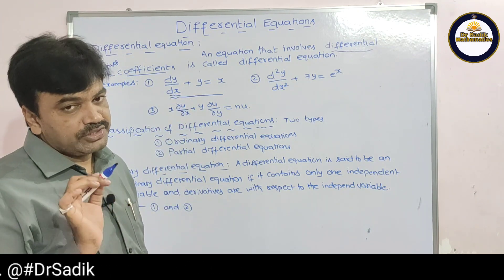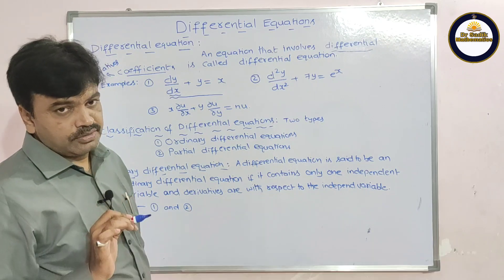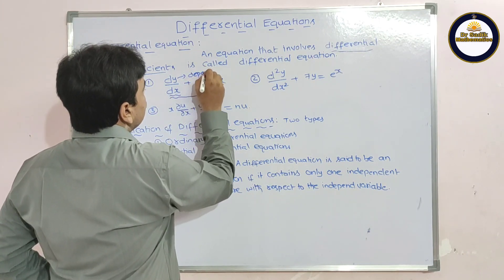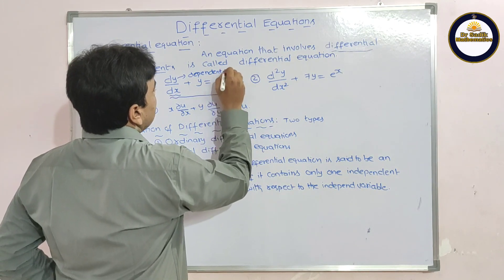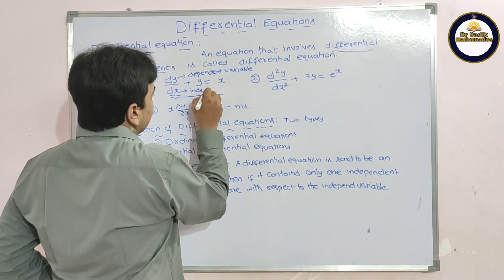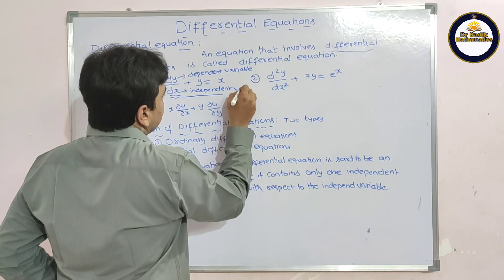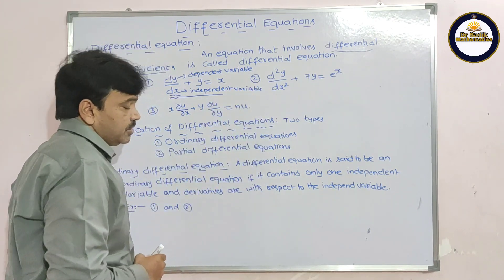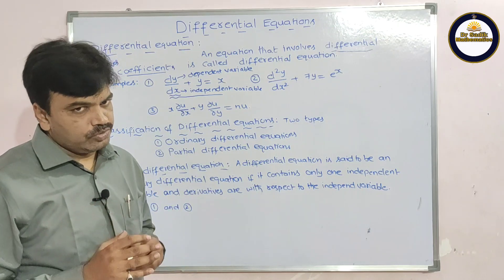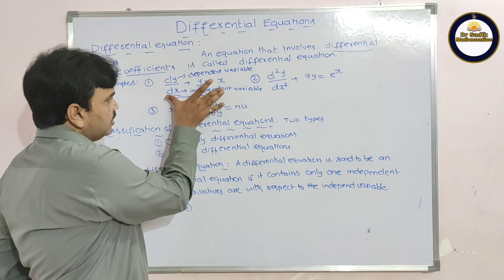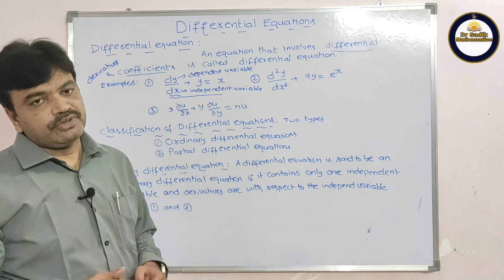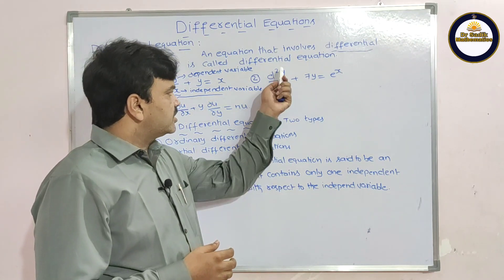Here, dy/dx is called a differential coefficient or derivative. In this equation, y is called the dependent variable and x is called the independent variable. This equation is called a differential equation.